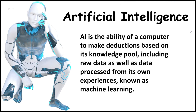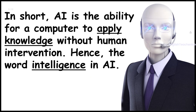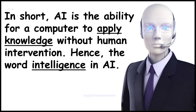Artificial intelligence — AI — is the ability of a computer to make deductions based on its knowledge pool, including raw data as well as data processed from its own experiences, known as machine learning. In short, AI is the ability for a computer to apply knowledge without human intervention, hence the word 'intelligence' in AI.